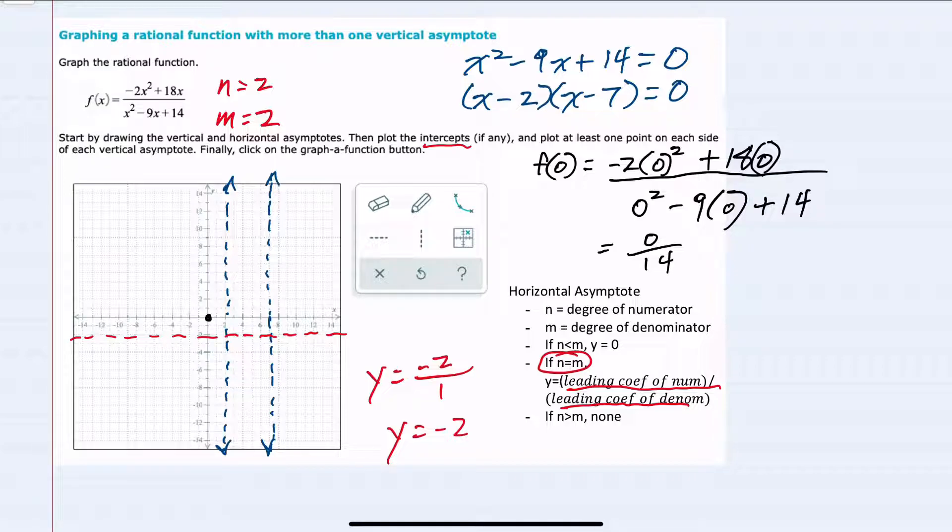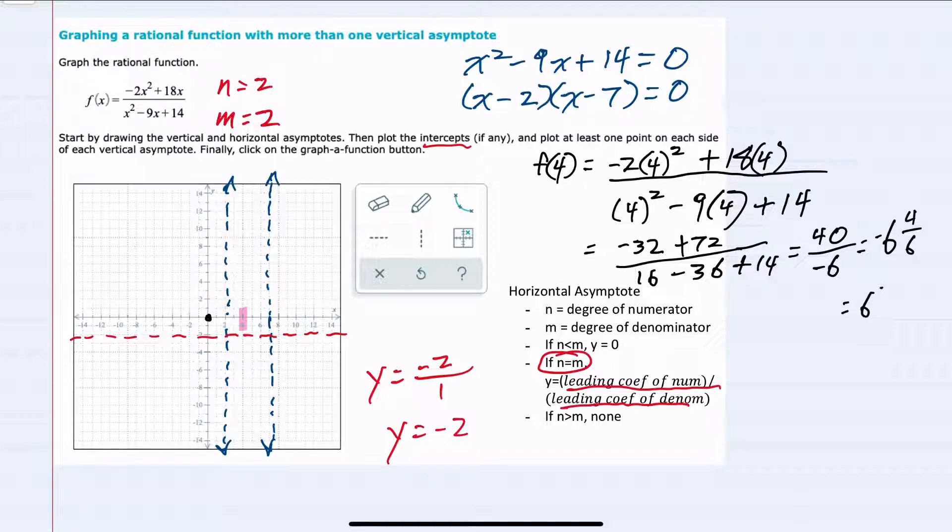So the last thing we need is one point on each side of the vertical asymptotes. We already have one on the left of the leftmost asymptote. So I'm going to plug in x equals 4 to use as a point between those two asymptotes. When I replace x with 4 in each one of those occurrences, I get negative 2 times 16 is negative 32, 18 times 4 is 72. In the denominator, 4 squared is 16, minus 9 times 4 is 36. Simplifying further, my numerator is 40, my denominator is a negative 6. So this simplifies to be negative 6 and 4/6 or negative 6 and 2/3, plotting that between negative 6 and negative 7.